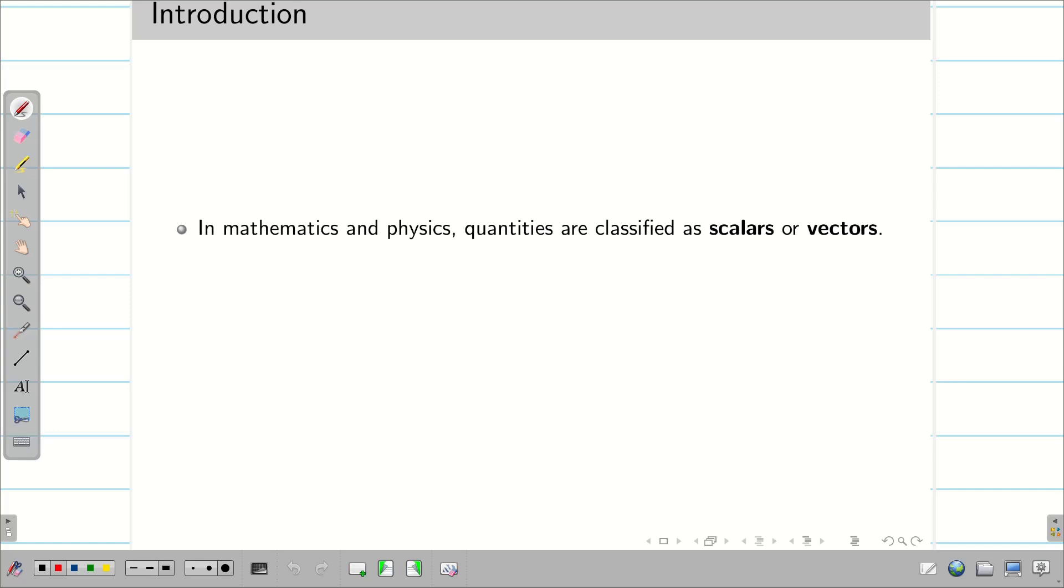Both in mathematics and physics, quantities are classified into either scalars or vectors. Scalar has only magnitude while vector has both magnitude and direction.